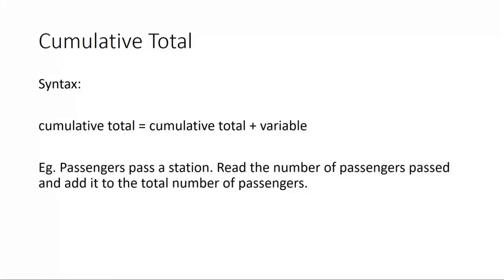Let's look at this example: passengers pass a station, so we're going to read the number of passengers passed and add it to the total number of passengers. The first thing we'll need to do is initialize the cumulative total variable — in this case we'll use total_passenger to store this cumulative total. Then after that we'll read in the number of passengers, which will be the variable storing the number of passengers that pass the station.